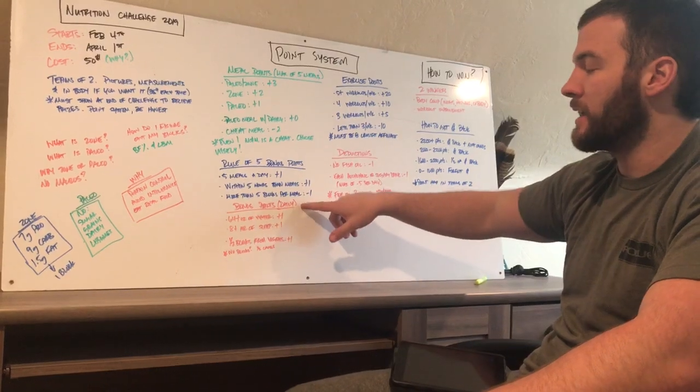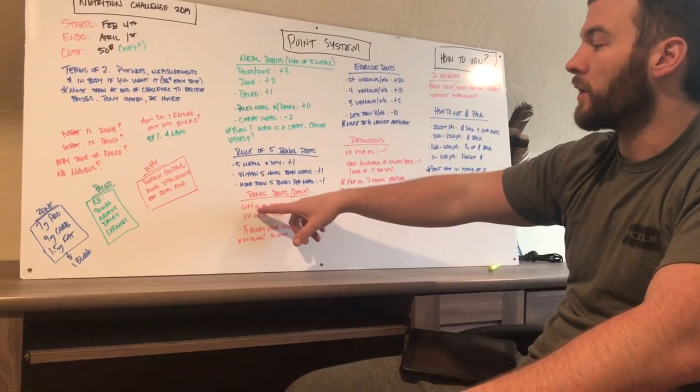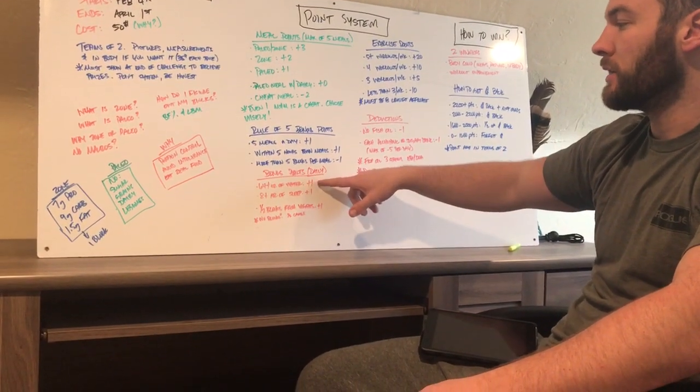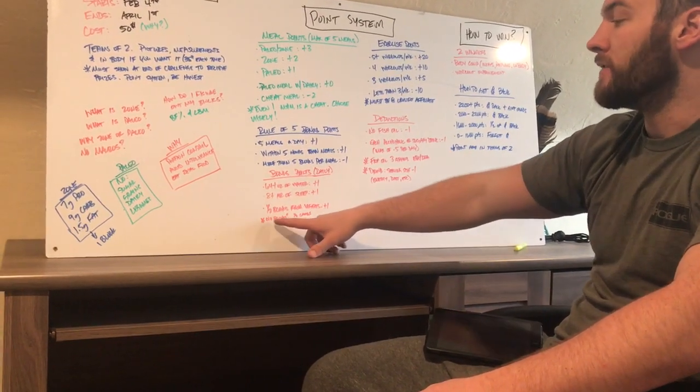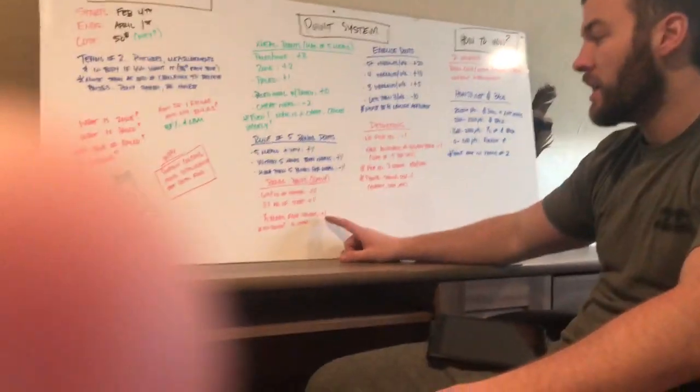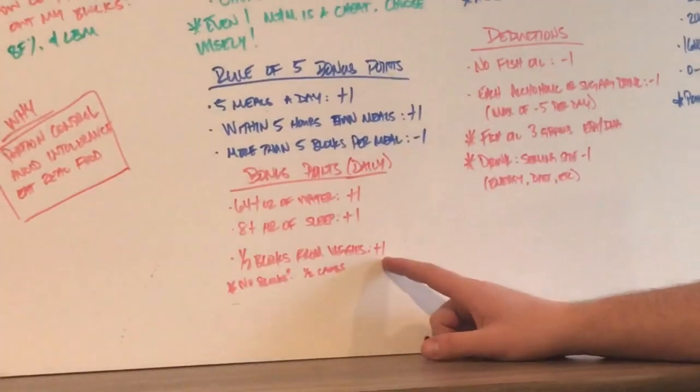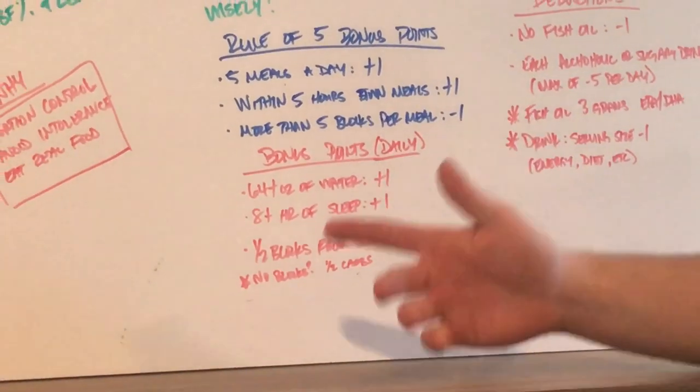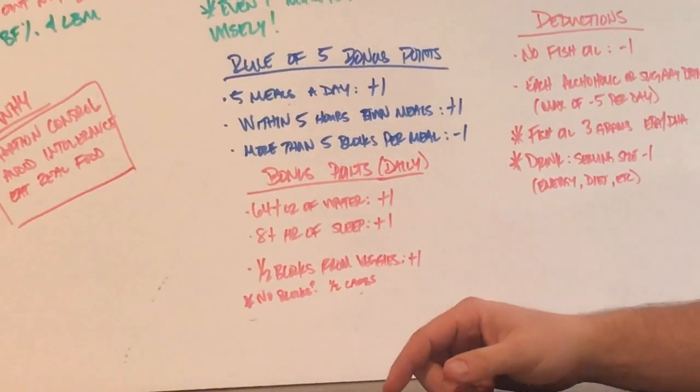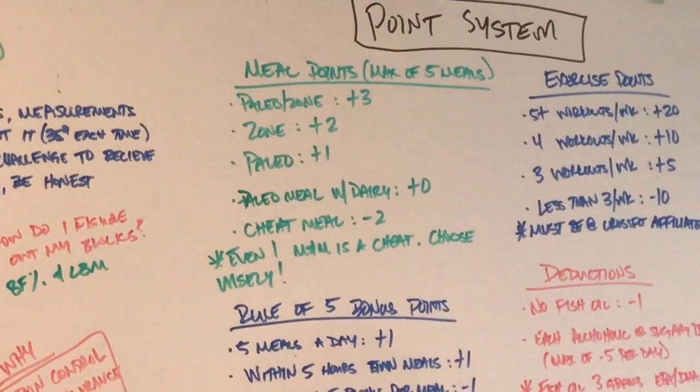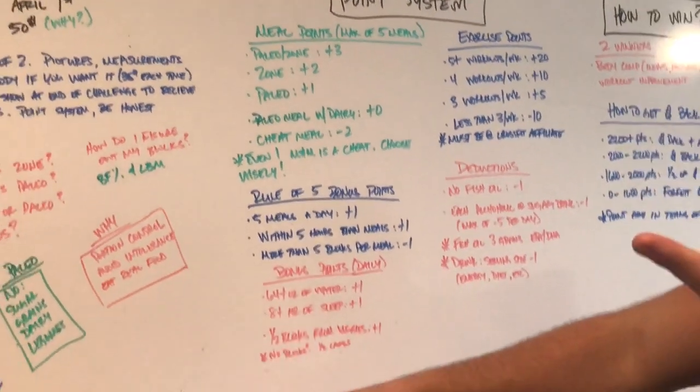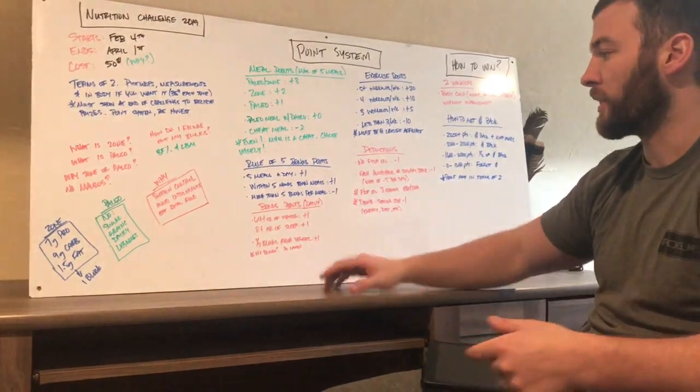Another way to get bonus points daily is if you do 64 or more ounces of water, you get plus one. If you do eight plus hours of sleep, you get another plus one. If half of your blocks are from veggies, you get plus one. If you're doing paleo and you don't know what blocks are. Well, it's pretty simple. Anything that is your carbs, so if I'm eating five meals, half of it for my carbs should be fruit and half of it should be veggies. If that's what you're doing, then yeah, you'll get an extra bonus point.